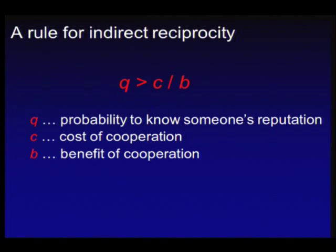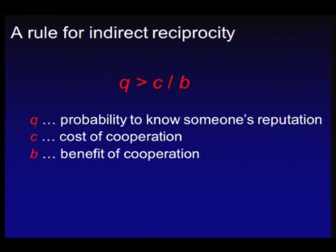There is a rule of indirect reciprocity: the probability of knowing someone's reputation must exceed the cost-to-benefit ratio for indirect reciprocity to have a chance. All of these mechanisms can work, but they are not guaranteed to work, and none of them ever lead to a stable equilibrium — they usually lead to oscillations.